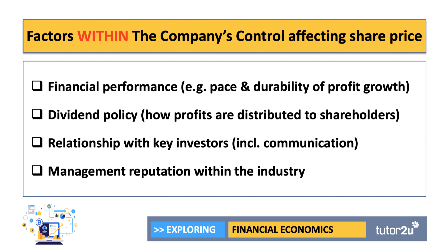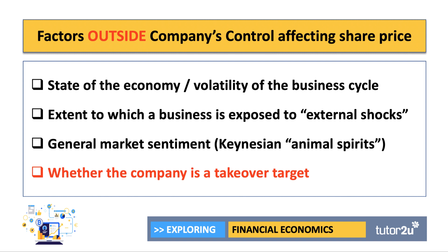What about factors outside a company's control — external factors which can certainly have an impact on the share price? Some stocks' share prices are closely linked to the economic cycle. For example, growth stocks: if an economy is doing well and incomes, spending, output, and jobs are going up, some stocks rise with the cycle — they rise with the tide, if you like.